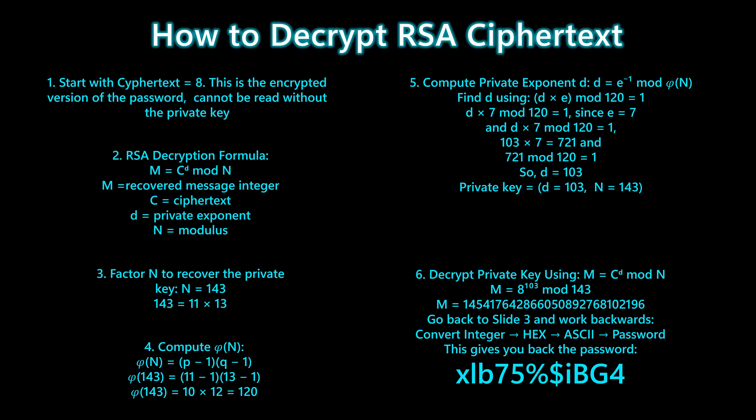Step 4: once we have the factors, we compute phi of n, the totient. Phi of 143 is 120. Step 5: the private key d is the inverse of e mod phi of n. Since e is 7, we solve d times 7 mod 120 equals 1. The value that satisfies this is 103 — that gives us the private key. Step 6: now we decrypt — we calculate 8 to the power of 103 mod 143, and the result is the original message integer. Step 7: convert that number back to hex, back to ASCII, and you recover the original password.